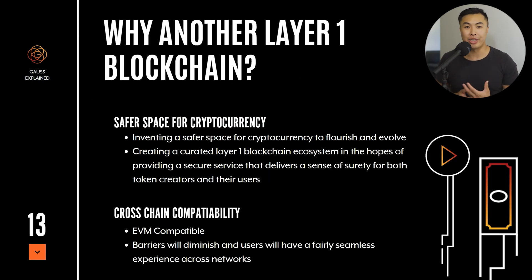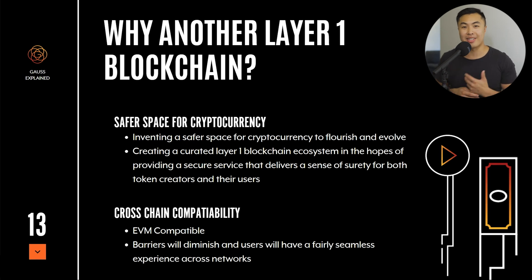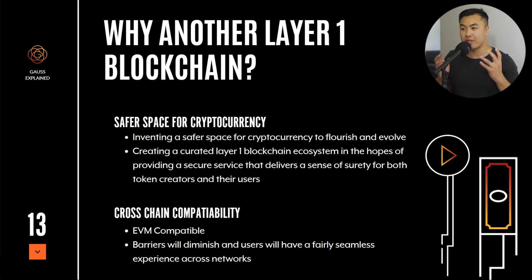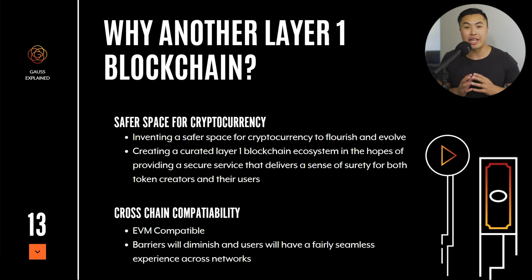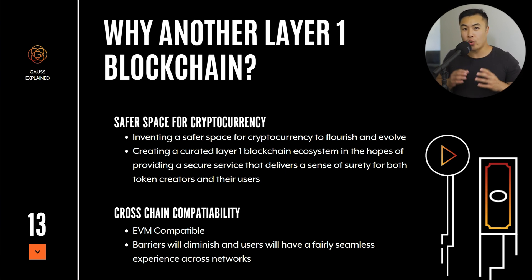With so many blockchains out there, why are we having another blockchain? The whole idea of Goss is to create a safer space for crypto. By creating a permissioned layer one blockchain ecosystem, the goal is to provide a secure service that delivers a sense of surety for both token creators and users. While other blockchains are meant to facilitate tokens or create innovative systems, the Goss blockchain is a blockchain for brands. This blockchain is being created with EVM compatibility, meaning it can interact with all other EVM-compatible blockchains — Polygon, Ethereum, Arbitrum, Optimism, and more. Eventually, that barrier between each blockchain is going to slowly diminish, allowing each blockchain to have its own use cases.